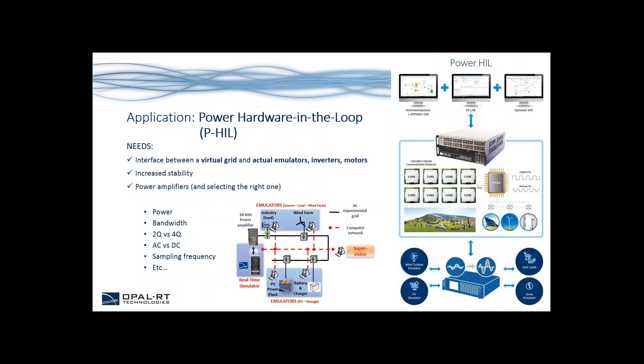The third application is power hardware-in-the-loop. When related to microgrids, we're talking about an interface between a virtual grid and actual emulators, inverters, and motors. We need to ensure increased stability due to power amplifiers being in the loop. One challenge is selecting the right power amplifier based on your needs — considering power, bandwidth, two-quadrant versus four-quadrant, AC versus DC, and sampling frequency. At Opal RT, we work with various third-party amplifier manufacturers to help you select the right one. The real-time simulator simulating the virtual grid is interfaced with a power amplifier, which then connects to wind turbine emulators, PV emulators, grid loads, motors, and inverters.